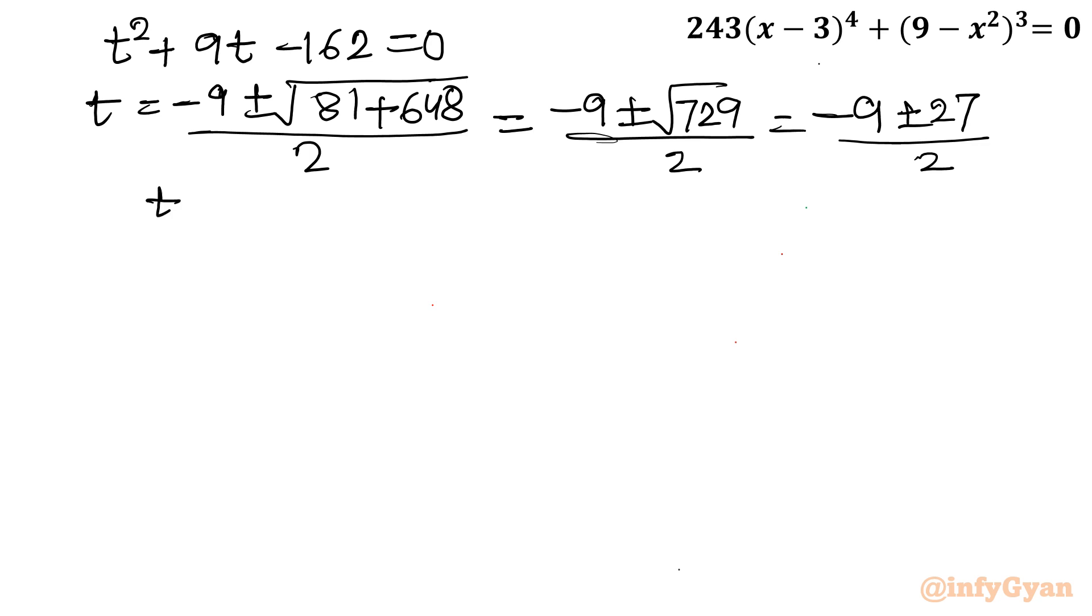Once I will consider plus sign, then I will write 27 minus 9, so 18 over 2 is 9. And minus sign, then minus 36 over 2 is minus 18. And remember t was our substitution that is x plus 3. So I will write x plus 3 equal to 9 and minus 18. Take away 3 from both sides. So x is equal to 6 and minus 21. So here we are having total 6 solutions: 3 with multiplicity 3, 6, and minus 21.